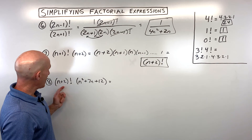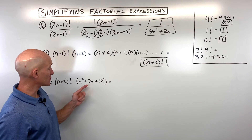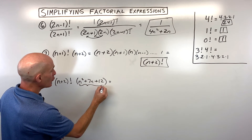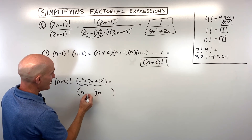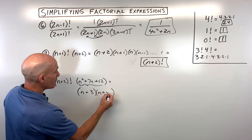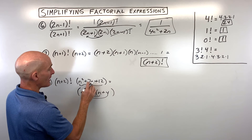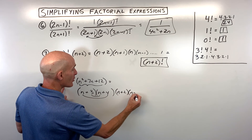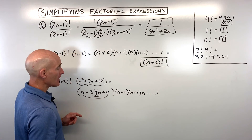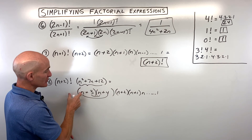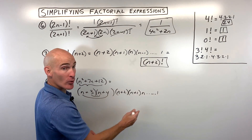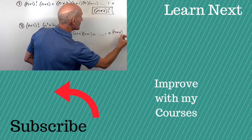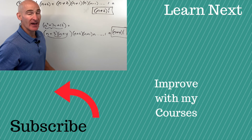For the last example, number eight, we have n plus two factorial times the trinomial n squared plus seven n plus 12. I would start by factoring the trinomial: it factors to n plus three times n plus four, because three times four is 12 and three n plus four n gives our middle term seven n. The n plus two factorial is n plus two, n plus one, n, down to one. Since multiplication is commutative, this is really n plus four, n plus three, n plus two, n plus one, down to one — which is n plus four factorial.